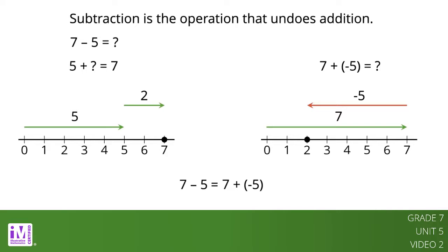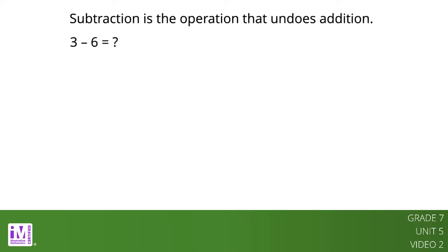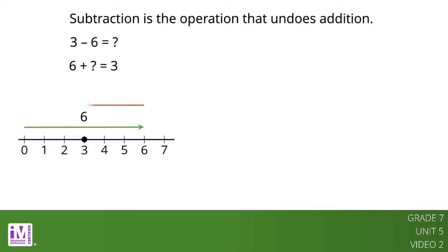Let's look at another subtraction problem. The answer to 3 minus 6 is the same value as the number we can add to 6 to get 3. Here is a diagram that illustrates this equation. To get the sum of 3, the second arrow must be 3 units long, pointing to the left. This tells us that negative 3 is the number that completes these equations: 6 plus negative 3 equals 3, so 3 minus 6 equals negative 3.